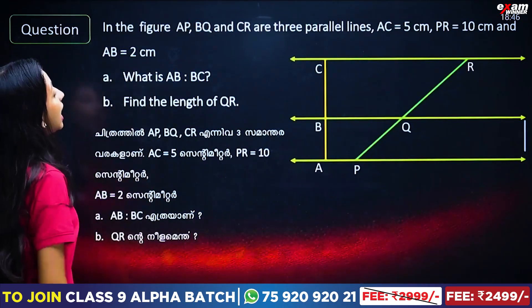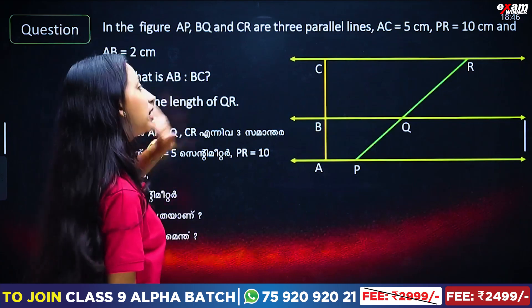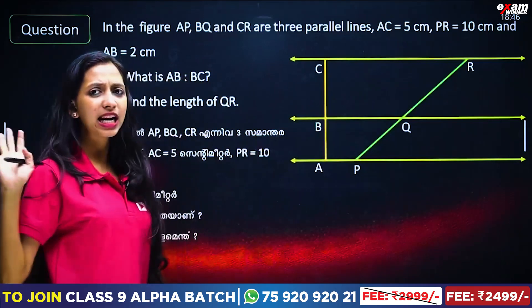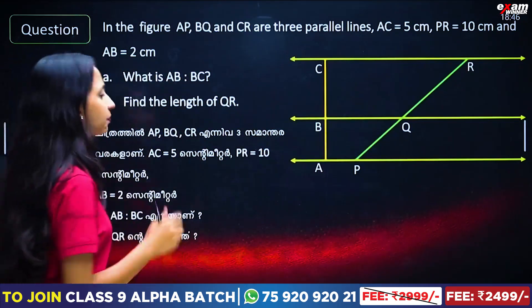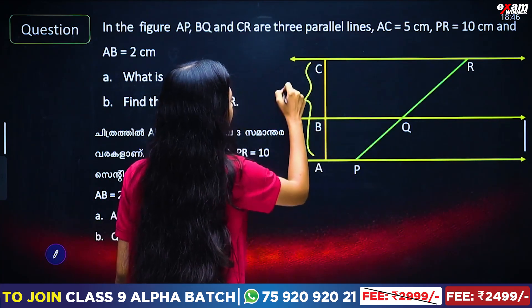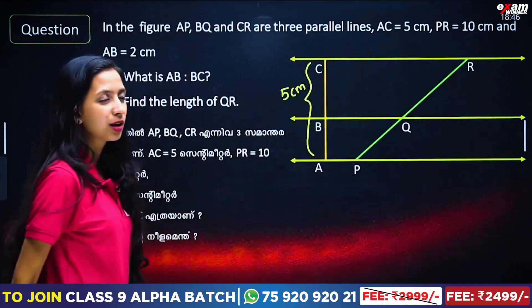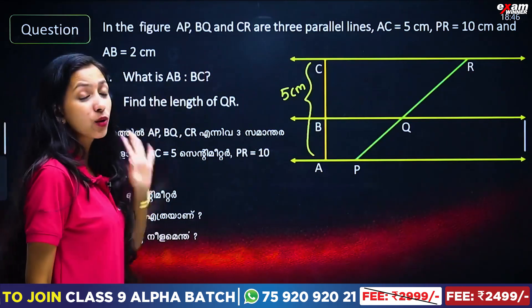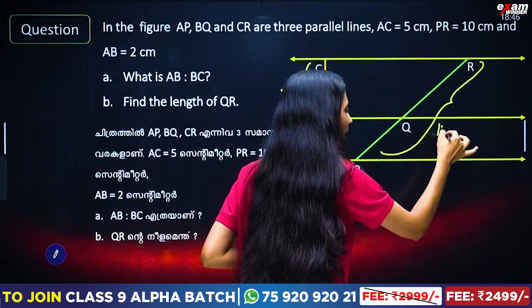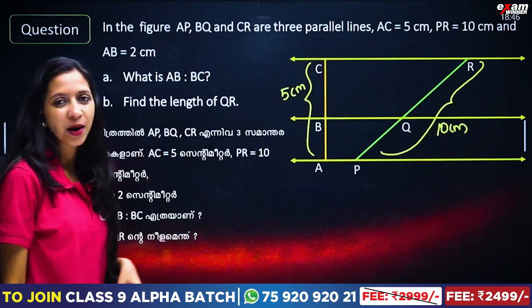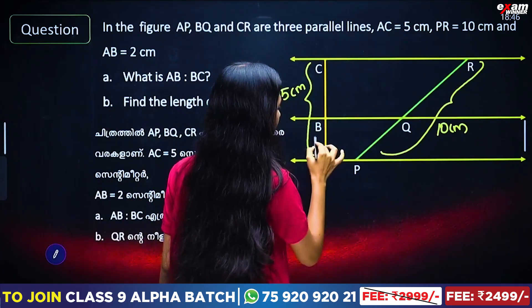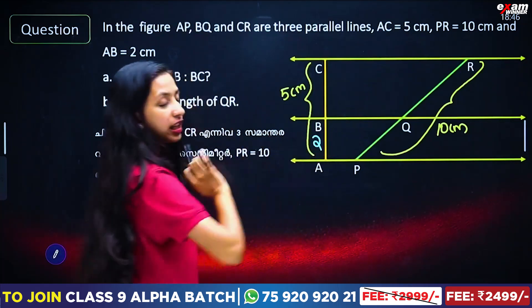In this figure, A, P, B, Q, and C are three parallel lines — the yellow color lines. The complete line AE is 5 cm, PR is 10 cm, and AB is 2 cm.